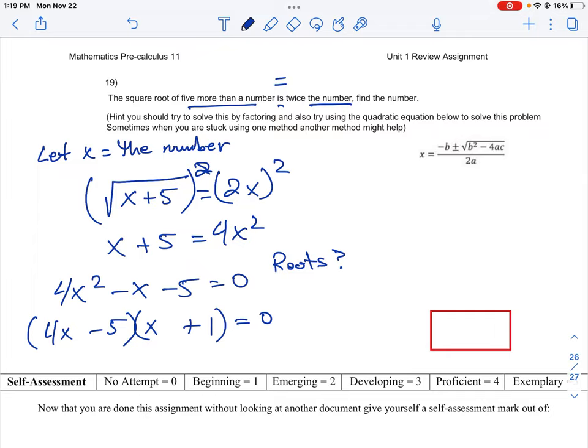In this case, we have two roots. 4x minus 5 equals 0, and x plus 1 equals 0. So x equals 5 quarters, or x equals negative 1.